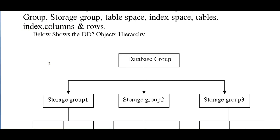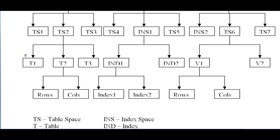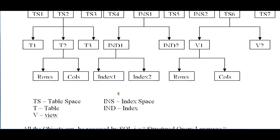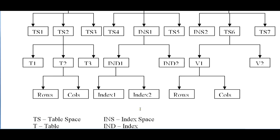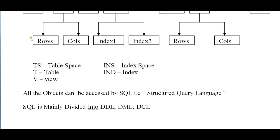Especially for DB2, this would be the hierarchy. T stands for tablespace, T stands for table, INS stands for index space, and ND stands for index. V stands for views.